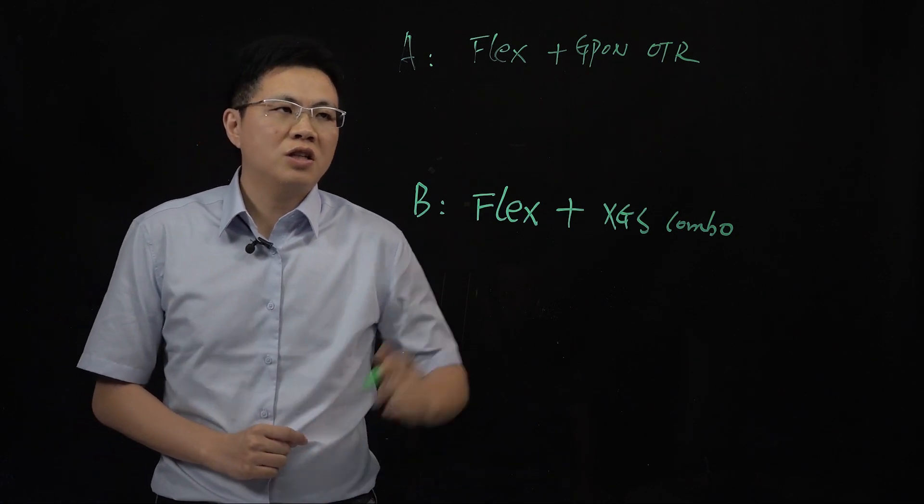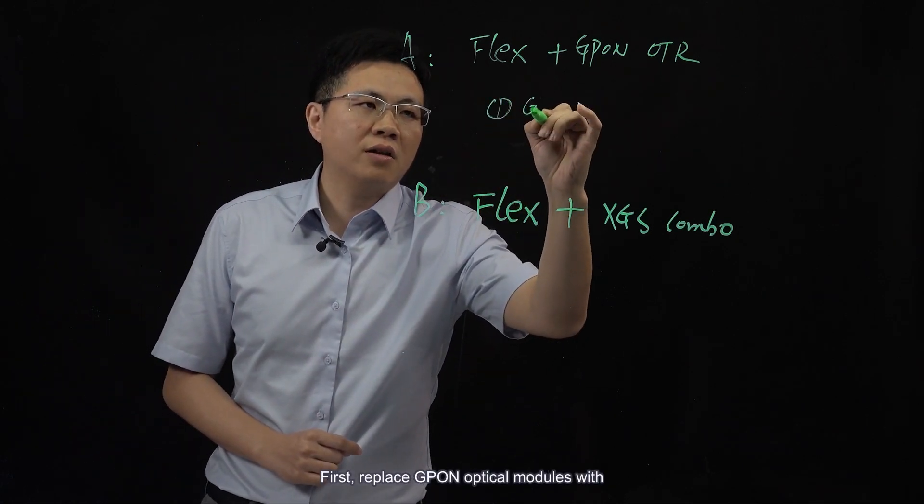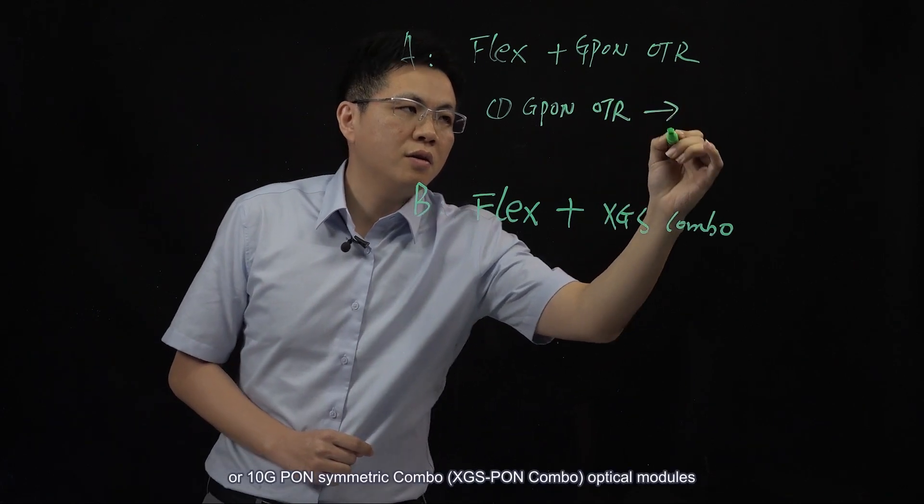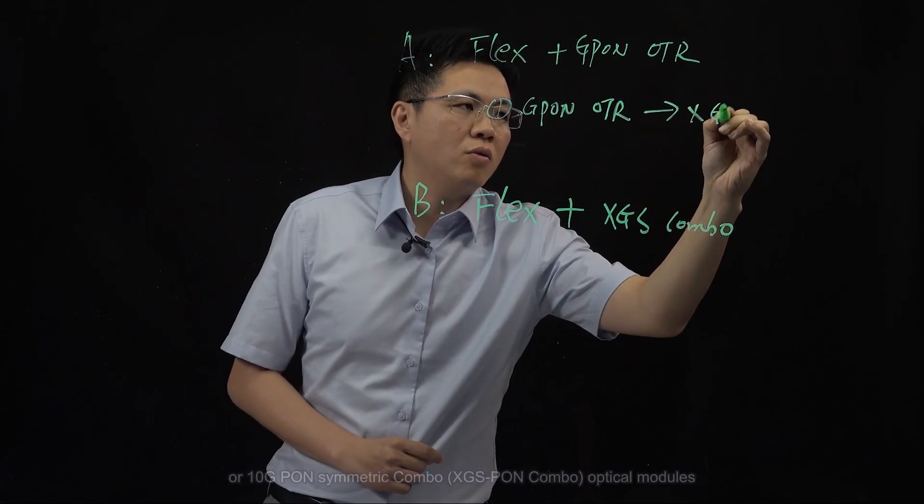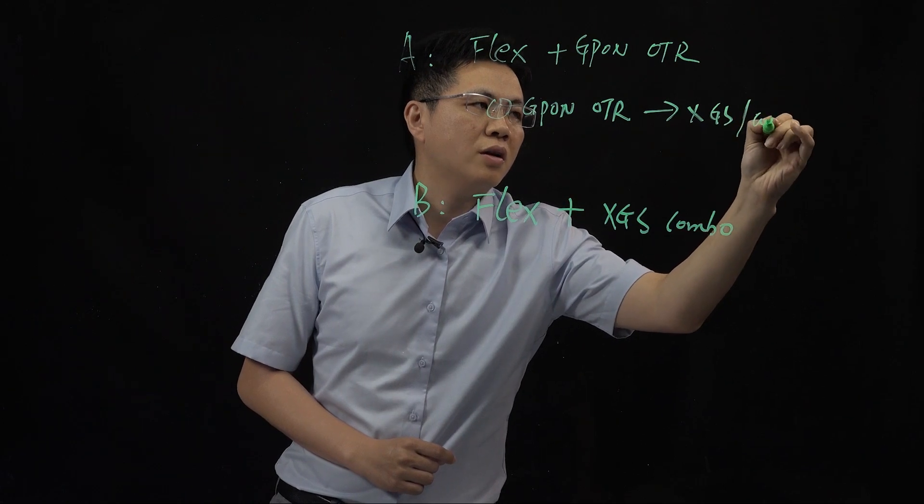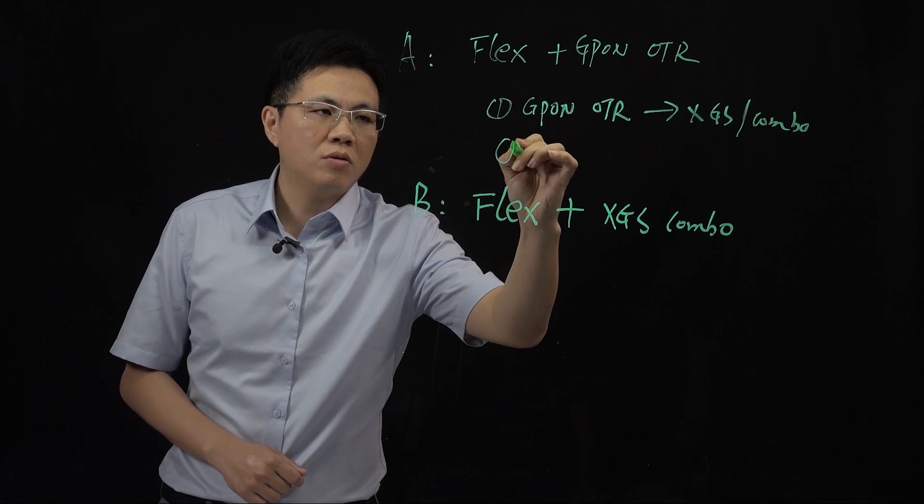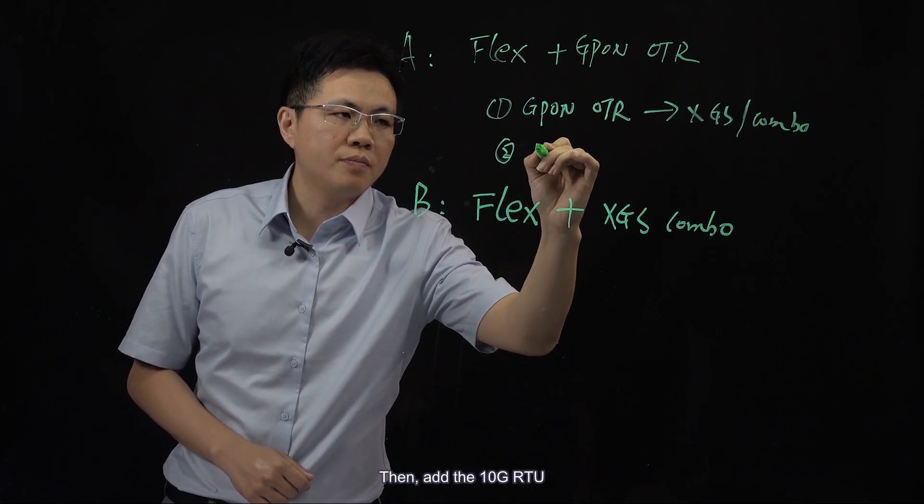To upgrade a network to 10G-Pon, solution A requires two steps. First, replace G-Pon optical modules with 10G-Pon symmetric or 10G-Pon symmetric combo optical modules.